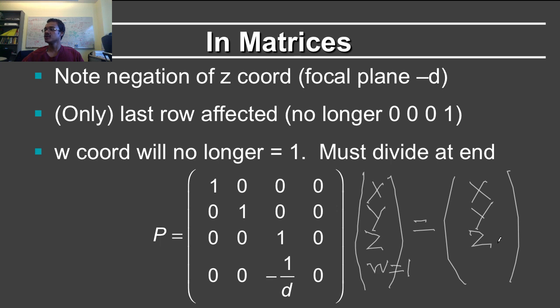So the only change is in this fourth coordinate, where the w value I have just multiplied by 0, so it is not even relevant, but what I am doing is I am taking minus z by d here. So minus z by d.